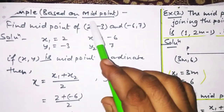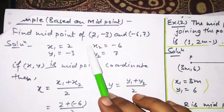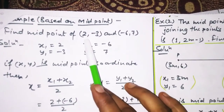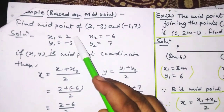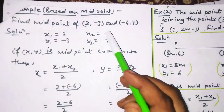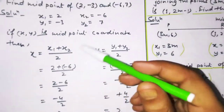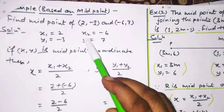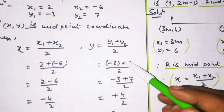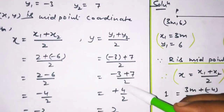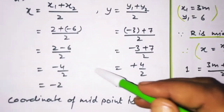Ab midpoint theorem pe based ek example dekh lete hain. Yahaan aapko midpoint find karna hai in dono points ka — x1, y1 aur x2, y2 diya hai. Midpoint ka formula lagate hain: x1 hai 2, x2 hai −6, value rakh di upon 2, solve kar liya, −2 aa gaya. Y1 plus Y2: Y1 hai −3 aur Y2 hai 7, −3 + 7 = 4, upon 2 = 2. To midpoint aa gaya: (−2, 2).